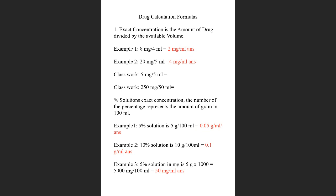Example two: you have a 10% solution. The 10 represents 10 grams, and the percentage means 100 mils. Finding the exact concentration: 10 divided by 100 — move the decimal point two places to the left because it's 100 — gives us 0.1 gram per mil.